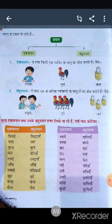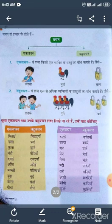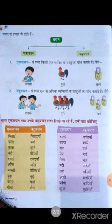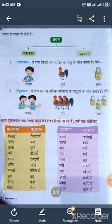जिससे एक वस्तु या व्यक्ति का बोध हो, उसे एक वचन कहते हैं। दूसरा है बहुवचन — यह शब्द एक से अधिक व्यक्तियों या वस्तुओं का बोध कराते हैं। जैसे लड़के, मतलब एक से ज़्यादा — लड़के दो या दो से अधिक हो सकते हैं।